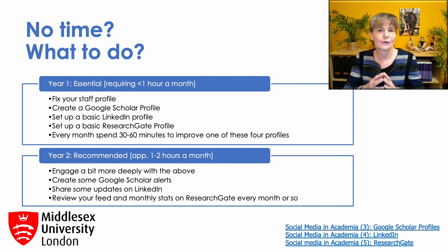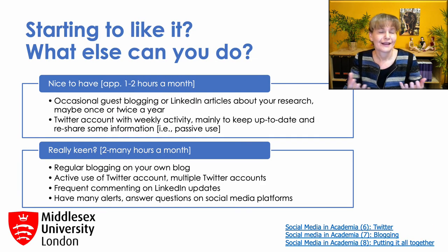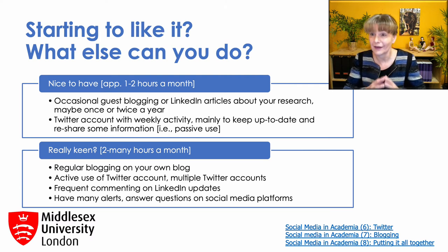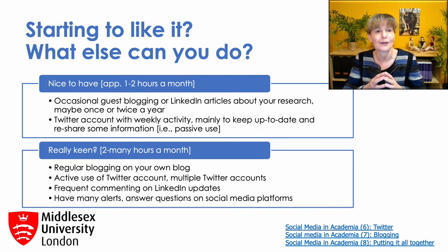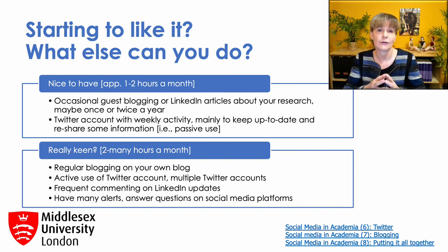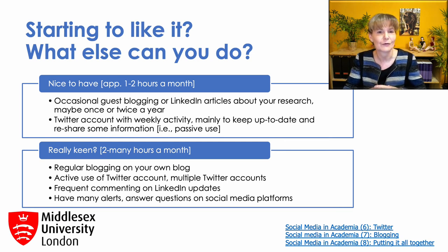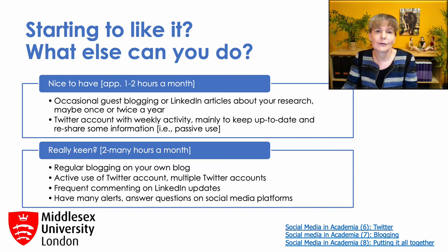So that's the first two years done. After the steps described for the first two years, you will be very comfortable with interacting on three key platforms: Google Scholar Profiles, LinkedIn and ResearchGate. If that's sufficient for you, feel absolutely free to stop there. But if you find you're starting to like using social media to build your research reputation, you could start to do guest blogging, maybe once or twice a year.